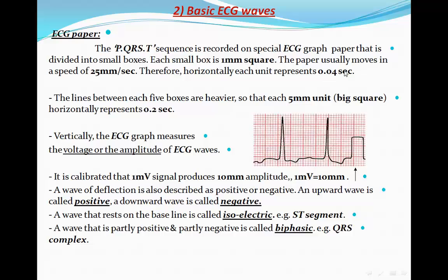Vertically, we are talking about voltages. The ECG machine is standardized so that every one millivolt of electrical stimulation produces 10 millimeters in height. This is called the standardization mark. It can appear automatically on the ECG paper, or it can be produced by pressing the one-millivolt button found on many ECG machines. By pressing this button, you produce a one-millivolt electrical stimulation and then check whether the resulting mark covers 10 millimeters in height — confirming that your standardization is correct.